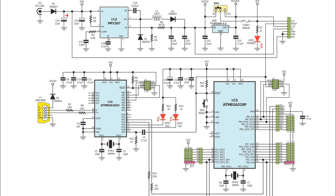Here we have another IC — IC2 — and here we have a switch. Also here is a fuse: Fuse 1 rated at 500 milliamps. When the current exceeds 500 mA it will blow. We have VCC here, a capacitor, and an LED — light emitting diode — with resistor R7 of 1 kilohm.